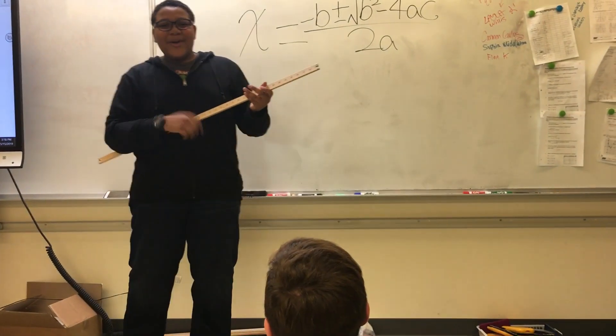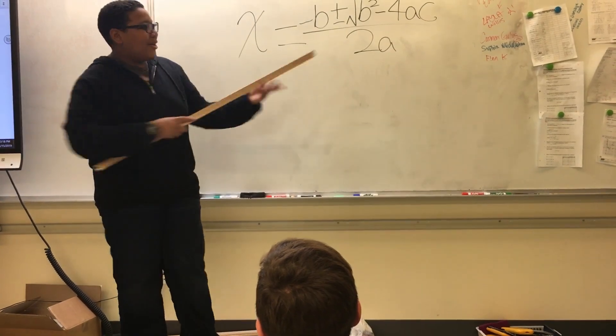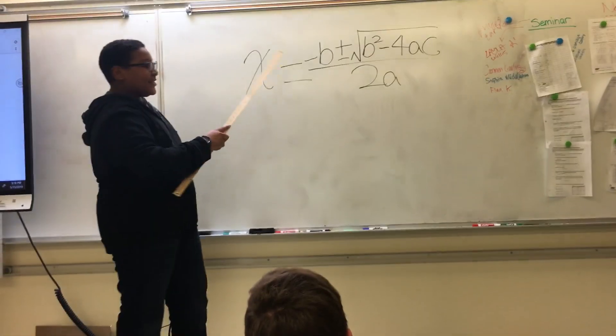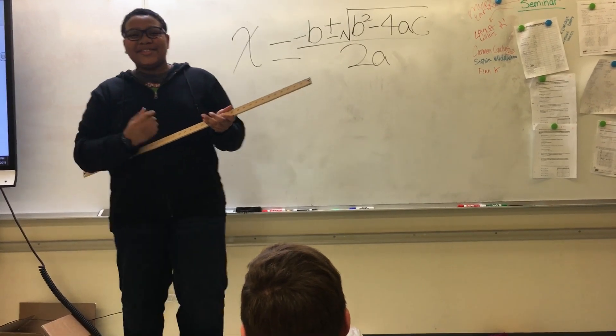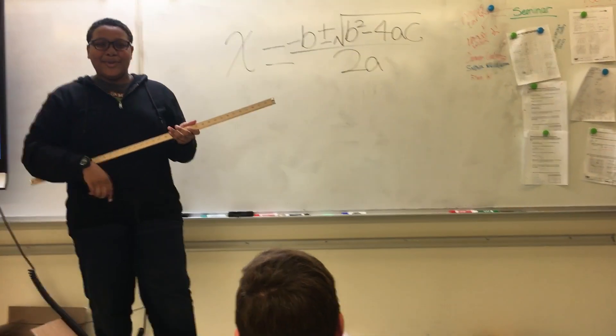Number under the radical, called a discriminant. B squared minus 4AC, it's the single equivalent. The number is positive, then there are two answers. Now you understand, what if it equals zero?